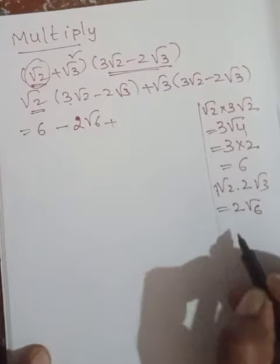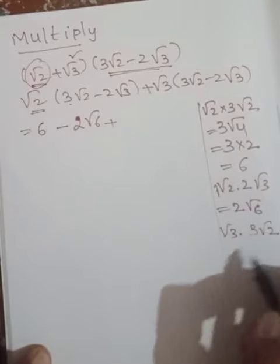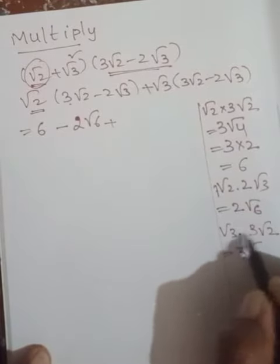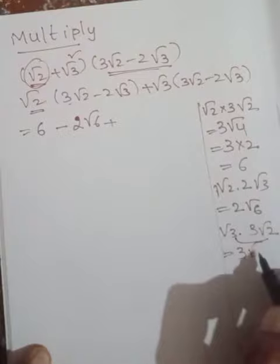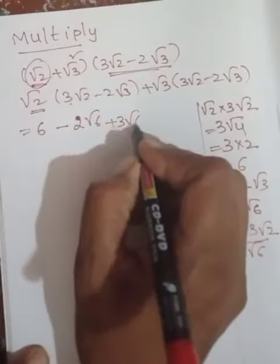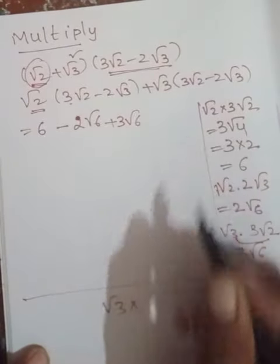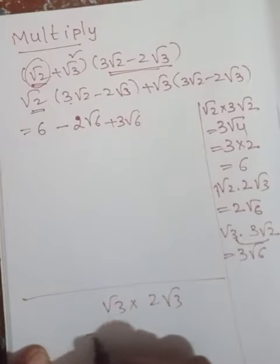Next we have plus √3 × 3√2. Look at this: 1 × 3 is 3, √2 × √3 get multiplied, that becomes √6. Then you are going to write here 3√6.